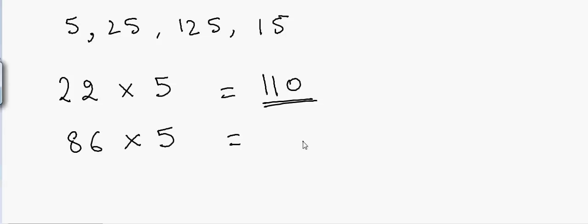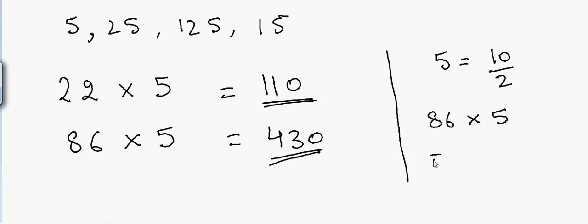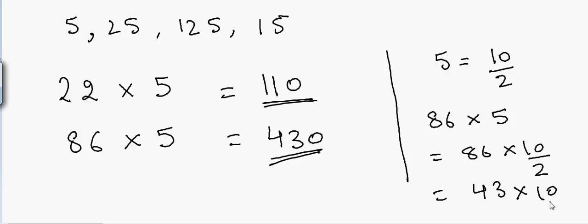Another example: 86 divided by 2 equals 43, then put a 0 at the end, so that's 430. The concept here is that 5 equals 10 divided by 2. So multiplying 86 by 5 is the same as 86 × 10 ÷ 2, which equals 43 × 10 = 430.